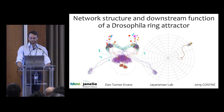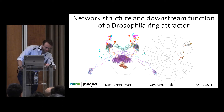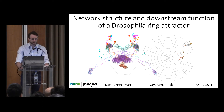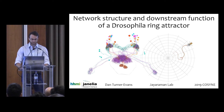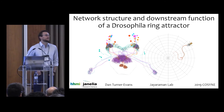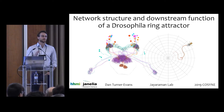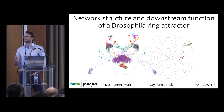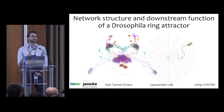Let me start off by describing a fascinating navigation behavior in insects. Ants, bees, and many other species are capable of path integration. These species can start at their nest or hive and go out foraging. They can wander for long distances, say tens of meters, and if they find food, they're able to travel in a straight line directly back to their nest. Experiments have shown they can remember both the angular heading and the distance, storing some kind of internal homing vector.